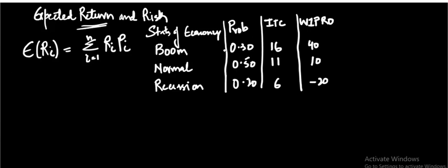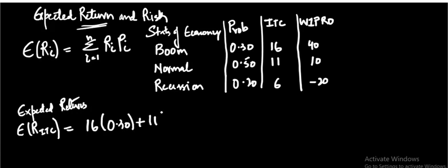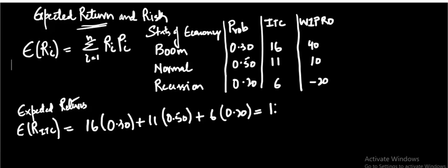If asked to calculate the expected return on these two securities, here is how. For ITC, the expected return equals 16% multiplied by 0.30, plus 11% multiplied by 0.50, plus 6% multiplied by 0.20, which gives a total expected return of 11.5 percent.